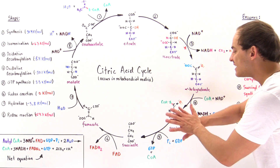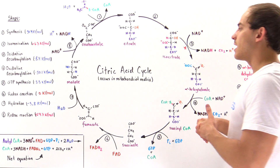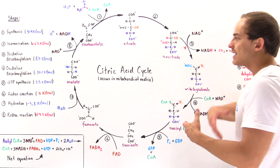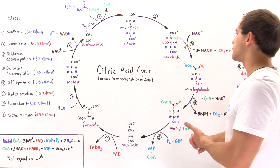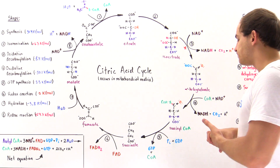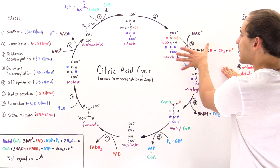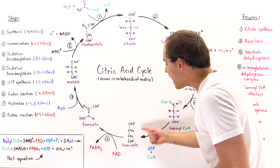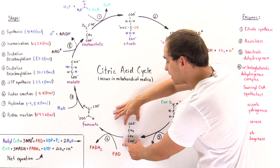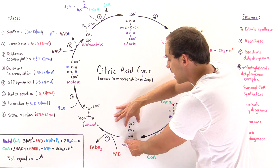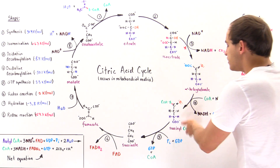We also produce the GTP. Step five is the only step of the citric acid cycle that actually generates this high-energy purine nucleoside triphosphate molecule, the GTP. The GTP can either be transformed into ATP, or it can be used by, for instance, a G protein to carry out some type of specific process in the cell such as a signal transduction pathway. The product molecule of step five is succinate, which is a completely symmetrical molecule — both ends contain the negatively charged carboxylate group with a methylene group in between — and that's why we no longer use color-coded atoms.